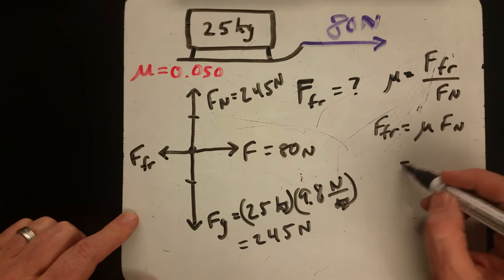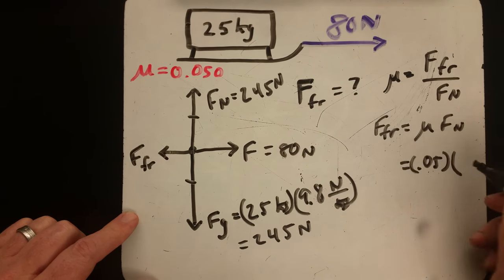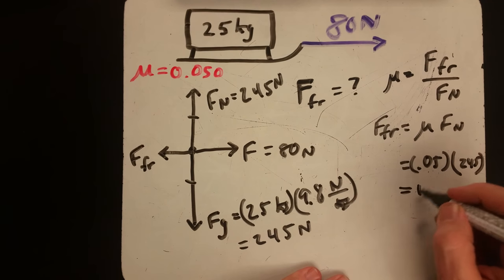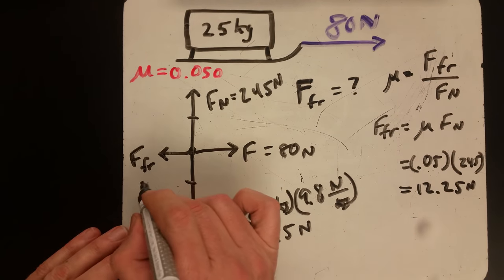So 0.05 times 245 is 12.25 newtons. You can write that in here as well.